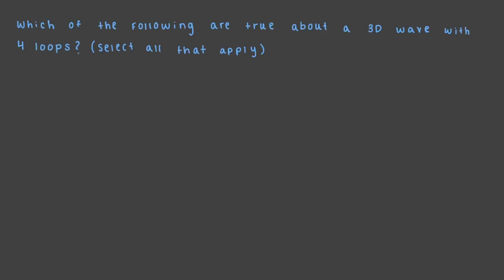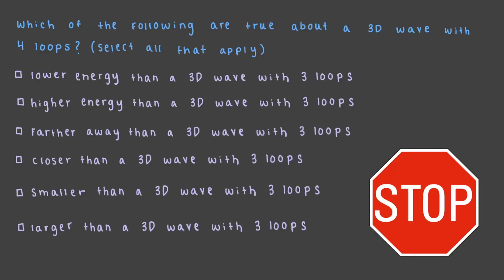Which of the following are true about a 3D wave with four loops? A 3D wave with four loops is larger and higher in energy than a 3D wave with three loops. Be careful, these waves are not farther or closer, just bigger and smaller.